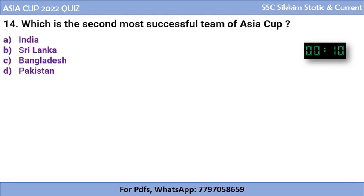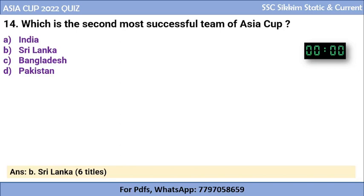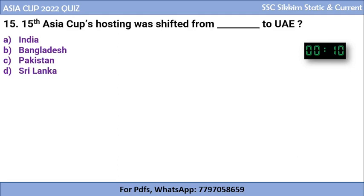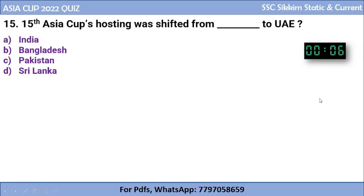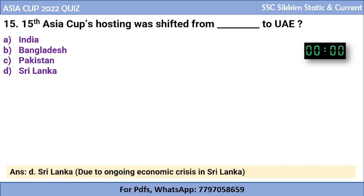Question 14: Which is the second most successful team in Asia Cup? We just saw India is the most successful team. The correct answer is Sri Lanka, which has won six titles. Question 15: The 15th Asia Cup hosting was shifted from which country to UAE? Some other country was originally going to host, then it was shifted to UAE. The correct answer is Sri Lanka. Sri Lanka was originally set to host but it was shifted to UAE due to the ongoing economic crisis in Sri Lanka.